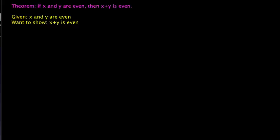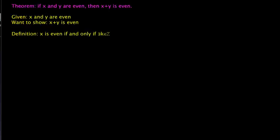The first thing we might ask ourselves is what do we mean by even, and that's where it's helpful to have a definition. Our definition is that x is even if and only if there exists a k, which is an element of ℤ — ℤ is the integers — such that 2k is equal to x.